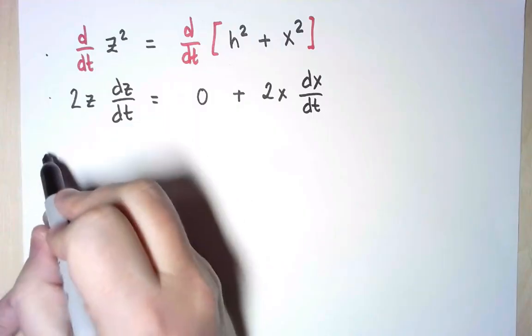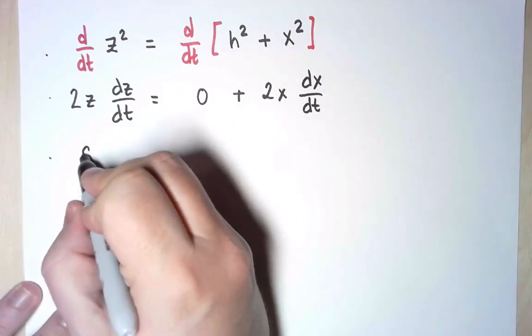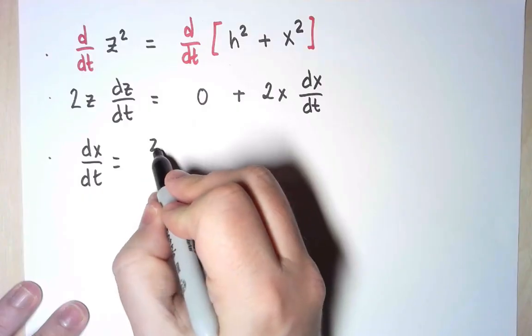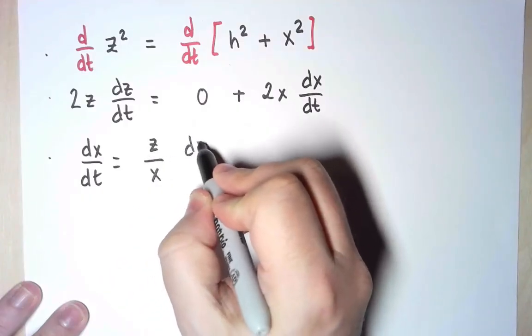And from here, I can solve for the quantity I need. dx/dt is equal to z over x times dz/dt.